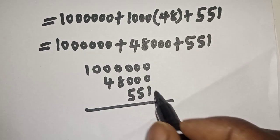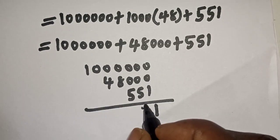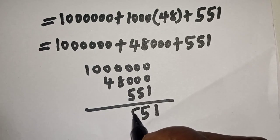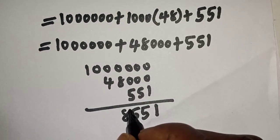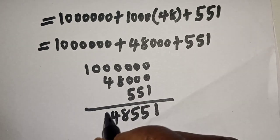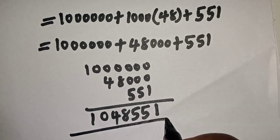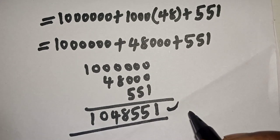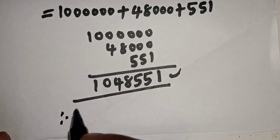Now 1 plus 0, 0, this is 1, here is 5, then here is 5, here is 8, 4, 0, 1, and this is the final answer.